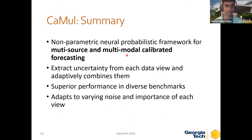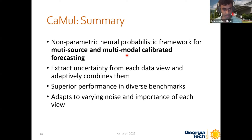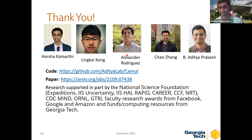To summarize, we present CAMEL, a non-parametric neural probabilistic framework for multi-view forecasting — both multi-source and multi-modal — which extracts data uncertainty from each view and provides superior performance on diverse benchmarks. We also show with case studies that it adapts to various degrees of noise from each of the different views. Thank you and I'm open to questions.